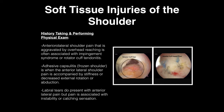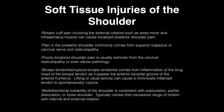Soft tissue injuries of the shoulder include several presentations. Anterolateral shoulder pain aggravated by overhead reaching is often associated with impingement syndrome and/or rotator cuff tendonitis. Adhesive capsulitis, or frozen shoulder, presents with anterior-lateral pain accompanied by stiffness and decreased external rotation and abduction. Labral tears do not present with anterior shoulder pain but are associated with instability or a catching sensation. Rotator cuff pain involving external rotators such as teres minor and infraspinatus can cause localized posterior shoulder pain. Pain in the posterior shoulder commonly comes from the superior trapezius or cervical nerve root radiculopathy. Poorly localized shoulder pain is usually extrinsic from radiculopathy or elbow pathology.